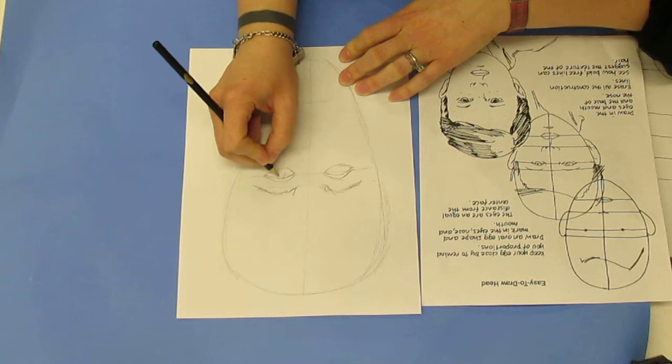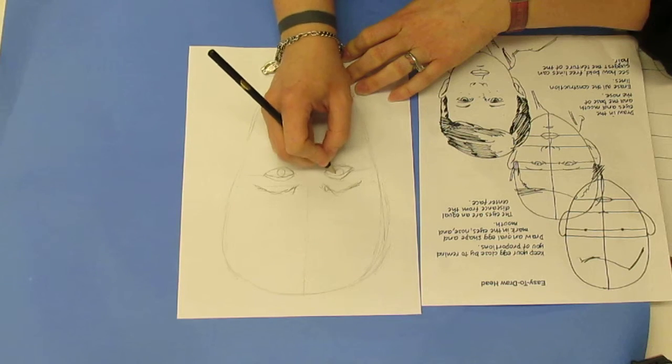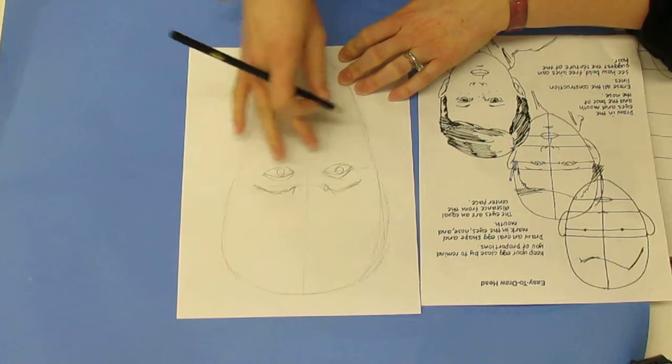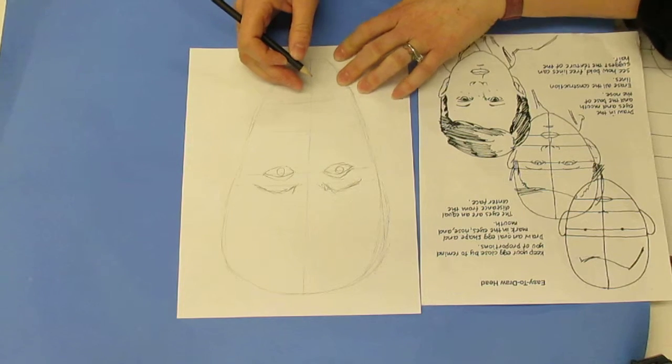And we're going to finish off with drawing our apple, and that is our iris. Now we have our eyes basically sketched in.